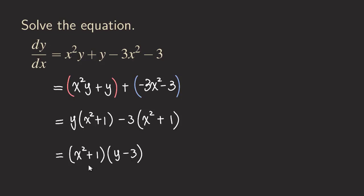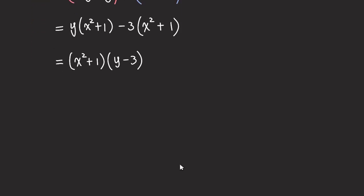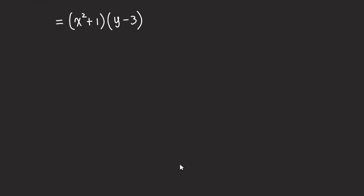As you can see, this is actually in the form of a separable equation, because the first factor is only involving the x, and the second factor is only involving the y. So now let's rewrite the equation as dy over dx, and then we can start solving this equation.